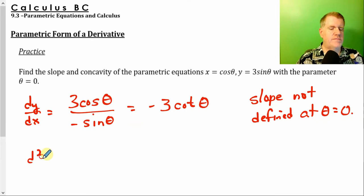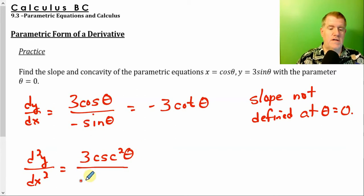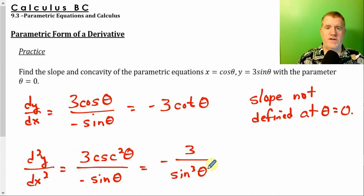I'm just going to rewrite this to make it a little bit easier to take the next part. So this is just negative 3 cotangent theta. Alright. So the second derivative. So the derivative of negative 3 cotangent of theta, remember the derivative of cotangent is negative cosecant squared. So this is going to become 3 cosecant squared of theta over our dx dt, which is negative sine of theta. Now, remember cosecant is just 1 over sine, so this whole thing becomes 3 over sine cubed. Now when I plug in 0, guess what? It's undefined again. So it is neither concave up or concave down.